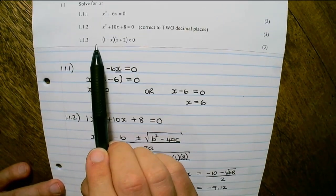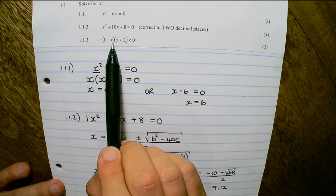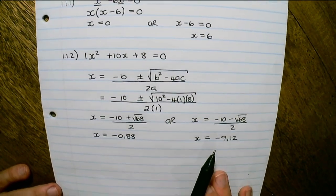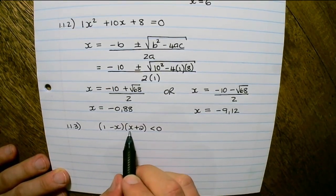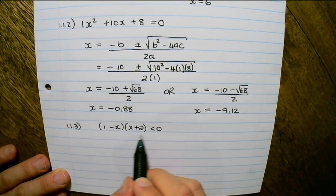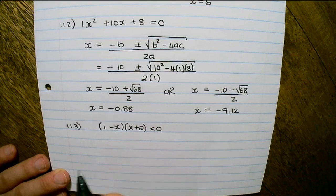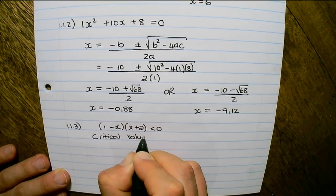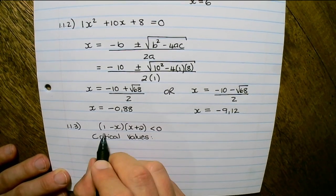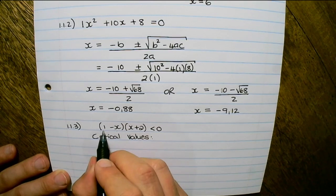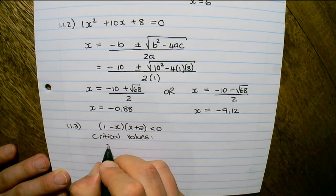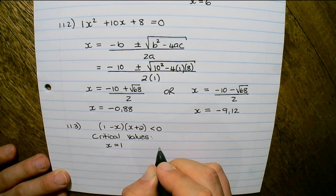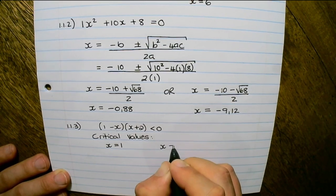Our third question is solve for x where (1 minus x)(x plus 2) is smaller than 0. So I have 1 minus x and x plus 2 smaller than 0. It's already factorized so you do not need to multiply out, and you can find two critical values. I place both brackets equal to 0: 1 minus x equals 0 means x equals 1, and x plus 2 equals 0 means x equals negative 2.